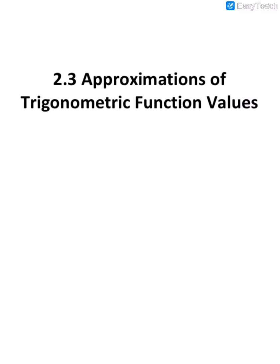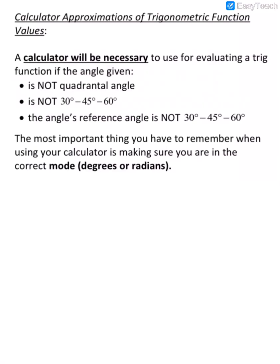This is 2.3 approximations of trigonometric function values. We have to use approximations of trig function values whenever our trig function has an angle that is not a quadrantal angle.